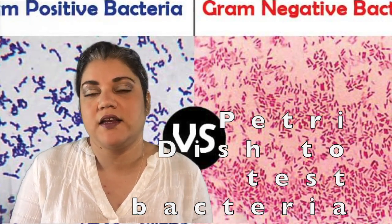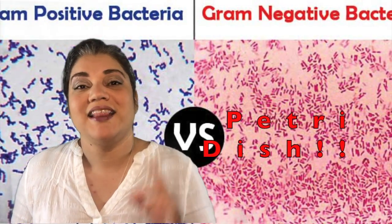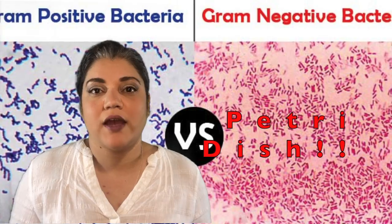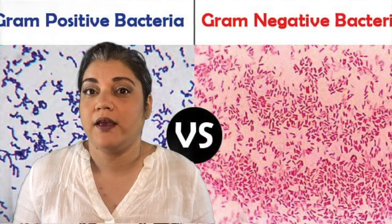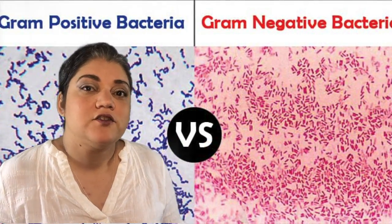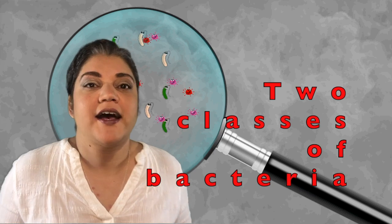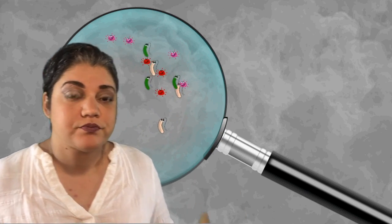They use a crystal violet stain in the lab so that they can tell you what type of bacteria it is. Gram-negative bacteria tend to stain pink. These classifications help you determine a proper course of treatment for the bacterium in question, if treatment is necessary.